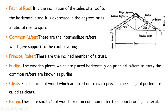Battens are small cross-section pieces of wood fixed on common rafters to support the roofing material. So the assembly from bottom to top is: tie beam on wall supports, then principal rafters, then purlins supported on principal rafters with cleats to prevent sliding, then common rafters supported on purlins, then battens above common rafters, and the battens provide support to the roof covering.